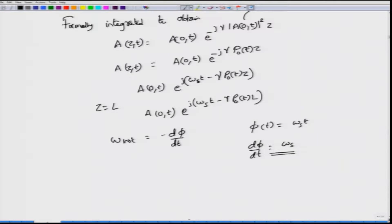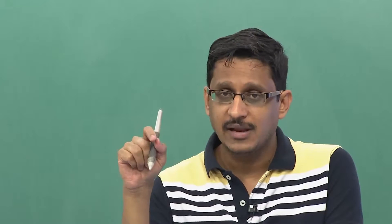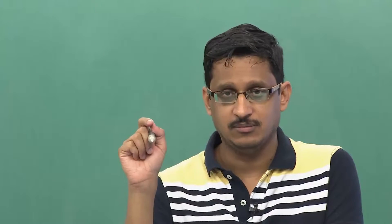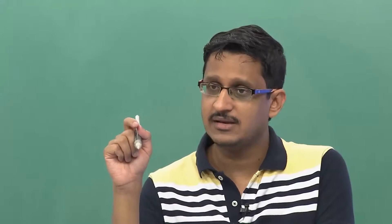The instantaneous frequency is given by d phi by dt. The phase term is coming from gamma P0(t) into L, and it is very important to note that this phase is dependent on the pulse power P(t). If the power is fluctuating with respect to time, the phase will also change with respect to time, and this change of phase with respect to time is called chirping.